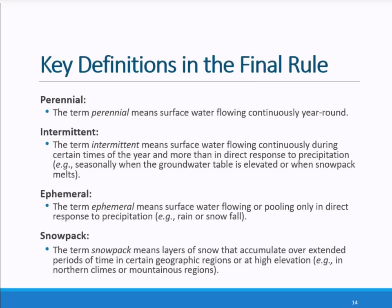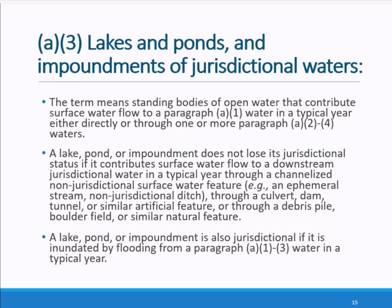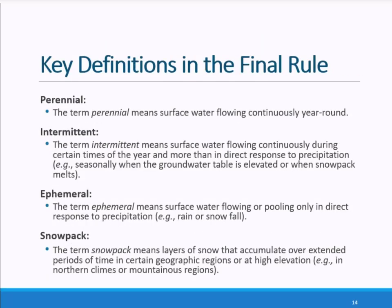The agencies are also clarifying the difference between snowpack melt and snowfall to distinguish between intermittent and ephemeral waters. Snowpack means layers of snow that accumulate over extended periods of time in certain geographic regions or at high elevation. The final rule does not mandate groundwater input as part of the definition of perennial or intermittent, which the agencies determined would too narrowly limit Clean Water Act jurisdiction over waters that provide sufficient surface water flow to traditional navigable waters in a typical year.